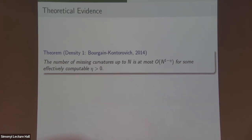What's some theoretical evidence towards this conjecture? Due to Bourgain and Kontorovich, the number of missing curvatures up to N is bounded by N to the one minus some small but effectively computable constant. In particular, the density of the missing curvatures is zero — equivalently, a density-one set of curvatures that could appear actually do appear. Of course density zero is not finite, but it's at least some progress, and this is very difficult, very deep work already.